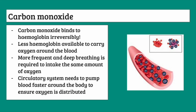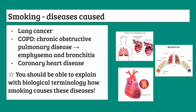Carbon monoxide is another substance that can enter your body from smoking. It binds to hemoglobin irreversibly, resulting in less hemoglobin being available to carry oxygen around in the blood. This means more frequent and deep breathing is required to intake the same amount of oxygen, and the circulatory system needs to pump blood faster and harder to ensure oxygen is distributed — meaning the heart has to work harder.